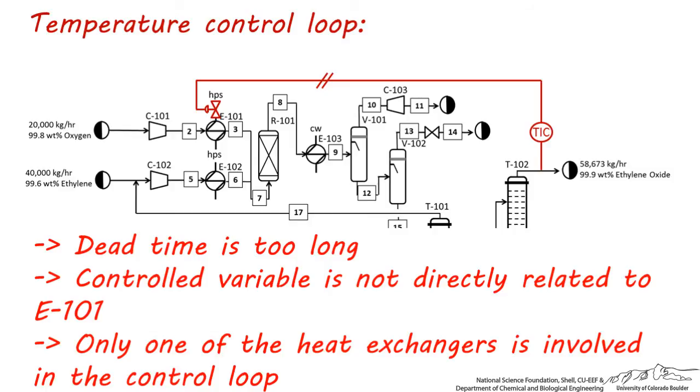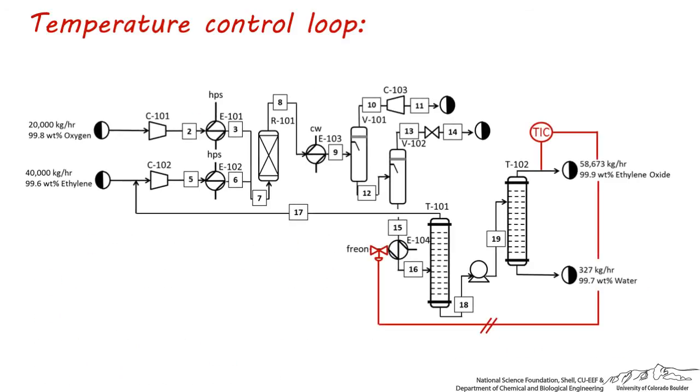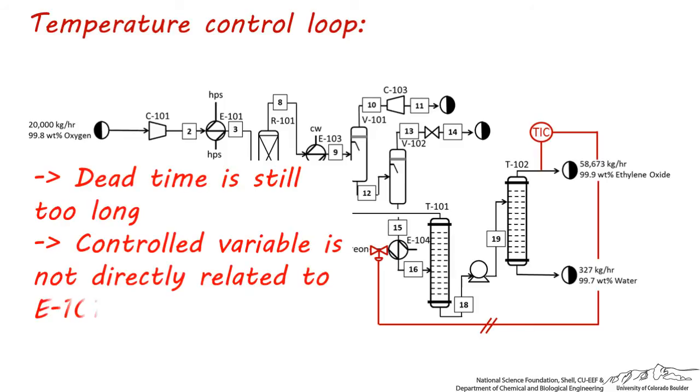Let's look at another example. This is another way of trying to control T102's distillate temperature. What might be wrong with this loop? This is also a bad idea, since even this heat exchanger is too far away from the final product stream. There's still at least a 10 minute dead time in this loop. Also, the distillate temperature is not directly related to this heat exchanger.